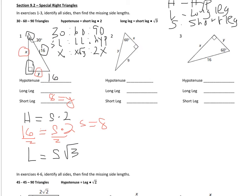For the long leg: the long leg equals the short leg times the square root of 3. The short leg is 8, so X equals 8 times the square root of 3.